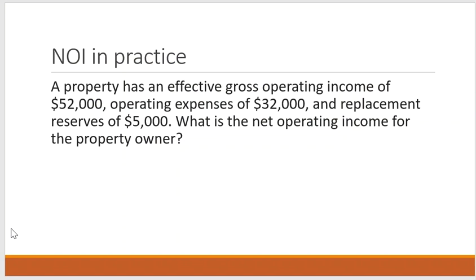So let's get the NOI in practice. A property has an effective gross operating income of $52,000, operating expenses of $32,000, and replacement reserves of $5,000. What is the net operating income for the property owner?